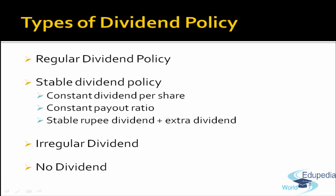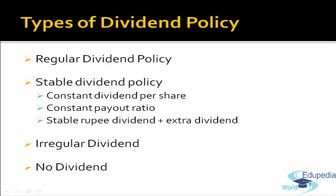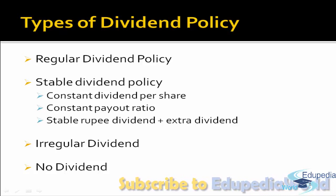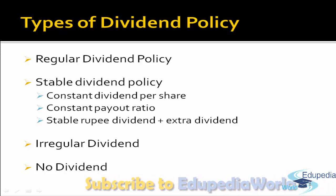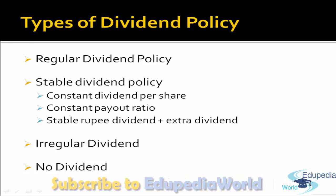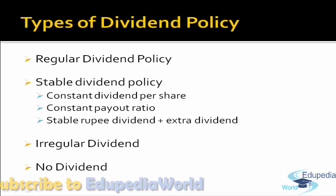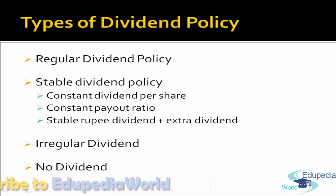There are various types of dividend policies. The first is regular dividend policy. As the name suggests, in this type of policy the company declares dividend at a usual rate. Generally, retired persons, weaker sections, or the middle income group opt for such a dividend policy because they need regular income. Benefits include that shareholders gain confidence over the company, it increases the market value of the share, and it builds the goodwill of the company. However, for this policy the company must have regular and stable income.